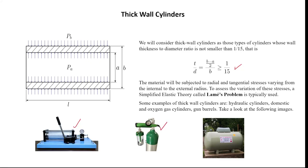Then you have an oxygen bottle or oxygen tank, used in hospitals or other facilities. You can also have these types of bottles or tanks in welding, containing gases or natural gas for cutting. There is also another type of pressure vessel or pressure cylinder, but again we need to return to the criterion to verify we are in the presence of a thick wall cylinder.